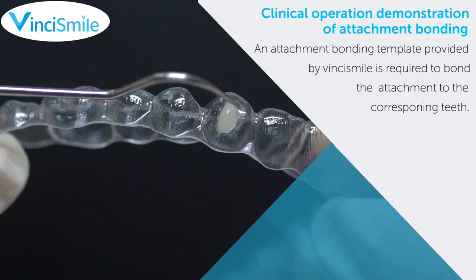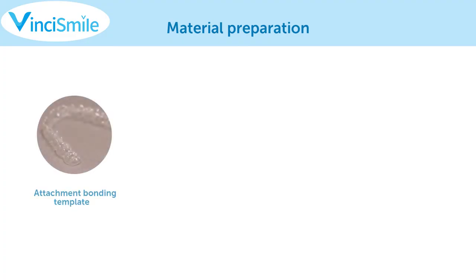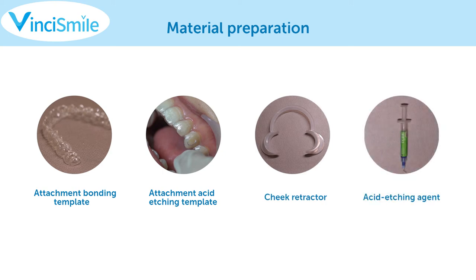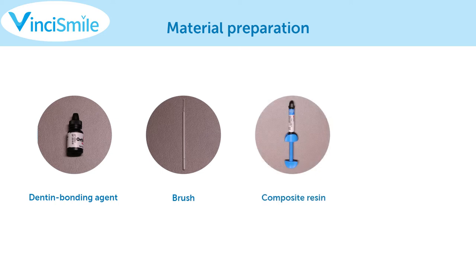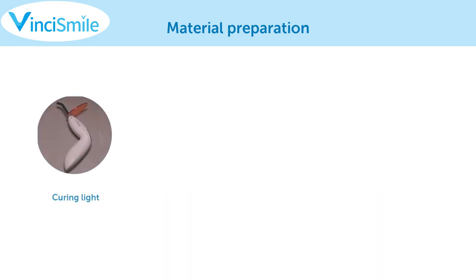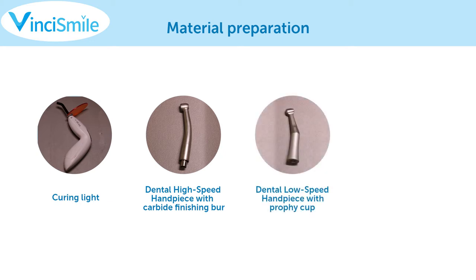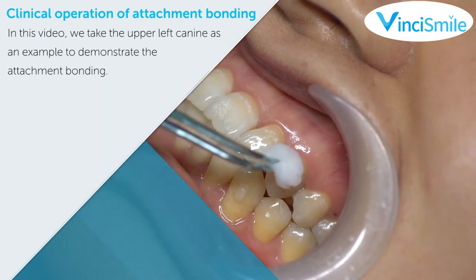An attachment bonding template provided by the manufacturer is required to bond the attachment to the corresponding teeth. Material preparation includes: attachment bonding template, attachment acid etching template, cheek retractor, acid etching agent, dentin bonding agent, brush, composite resin, plucker, curing light, dental high-speed handpiece with finishing bur, and dental low-speed handpiece with prophy cup and polishing paste.